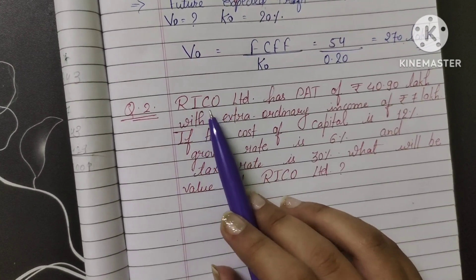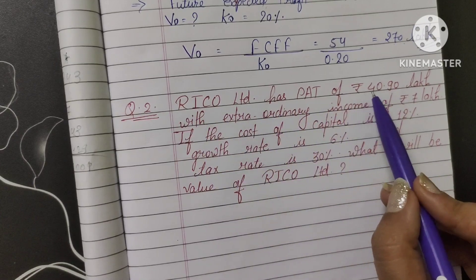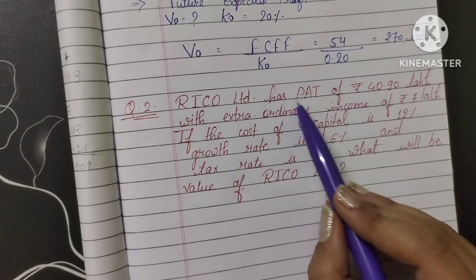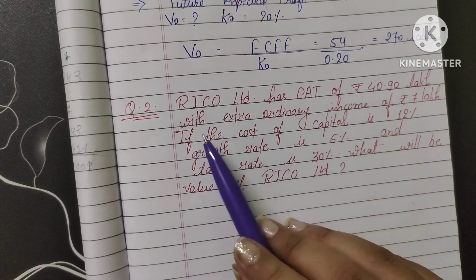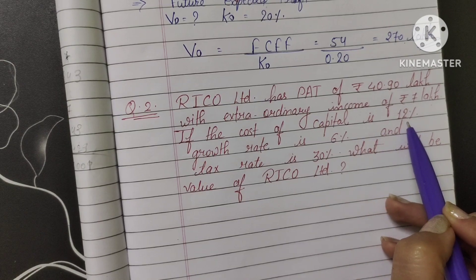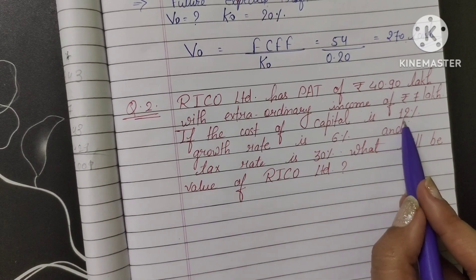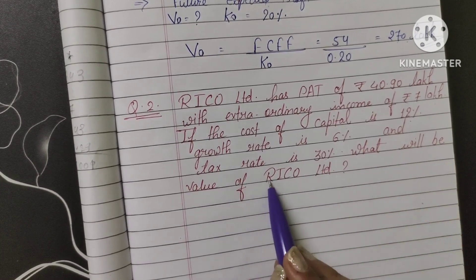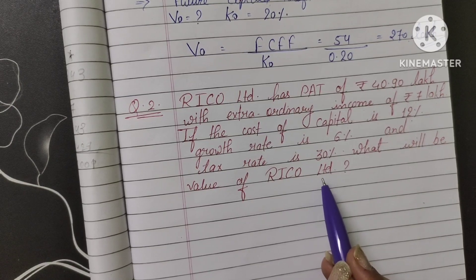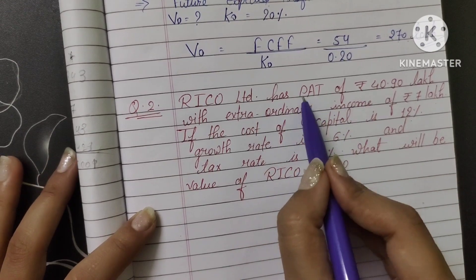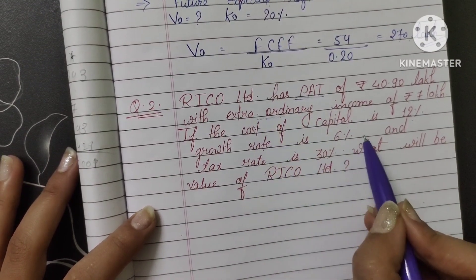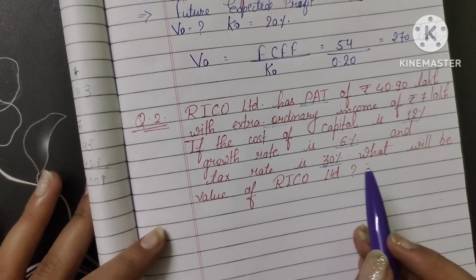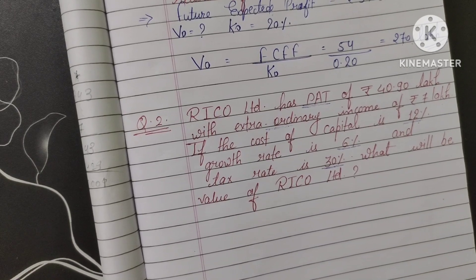Now the second question: RICO Limited has profit after tax of rupees 40.90 lakh, with extraordinary income of rupees 7 lakh. The cost of capital (Ke) is 12 percent, growth rate is 6 percent, and tax rate is 30 percent. We need to find the value of RICO Limited, which simply means the value of the firm. The information given includes profit after tax, extraordinary income, cost of capital, growth rate, and tax rate.